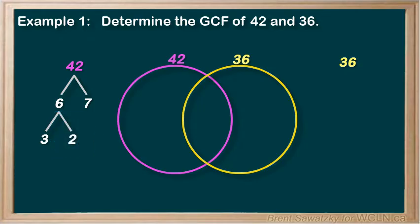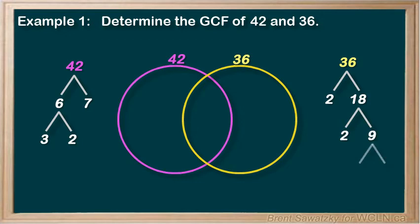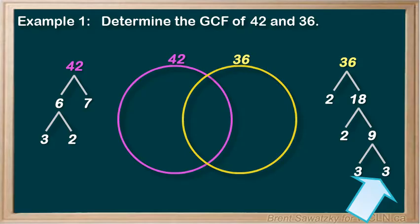Now let's switch to 36. For 36, we may notice that we can divide it by 2: 2 times 18 equals 36. The 18 can also be divided into 2 times 9. And then the 9 can be divided into 3 times 3. So we're left with four prime numbers: 2, 2, 3, and 3.